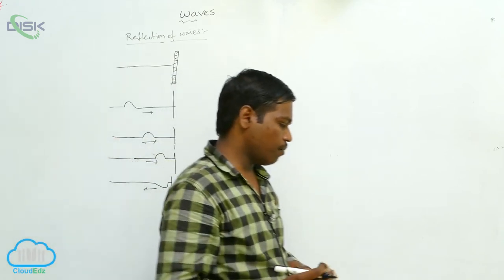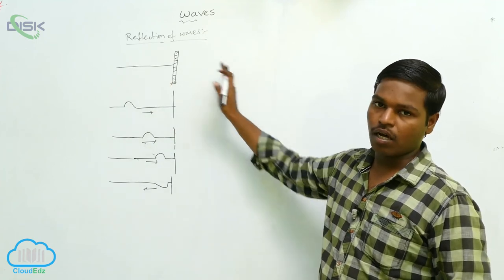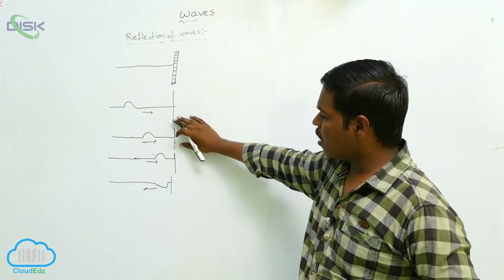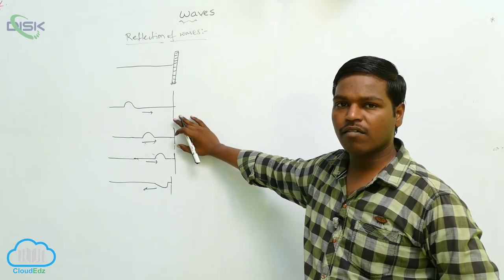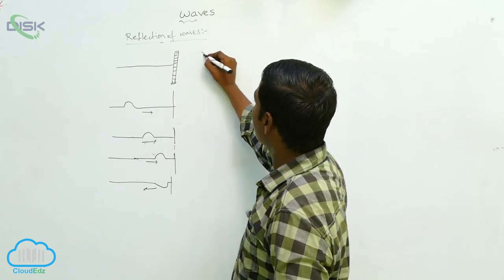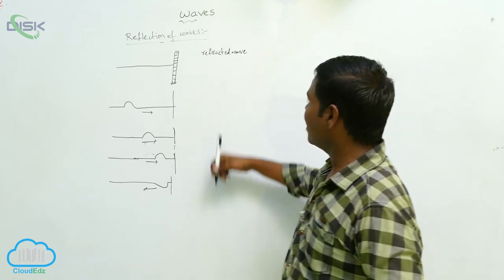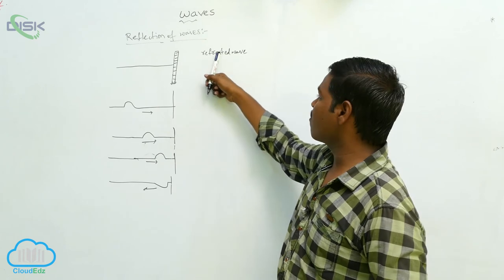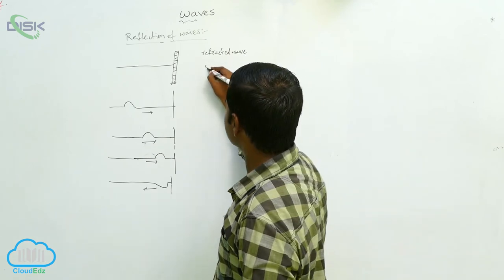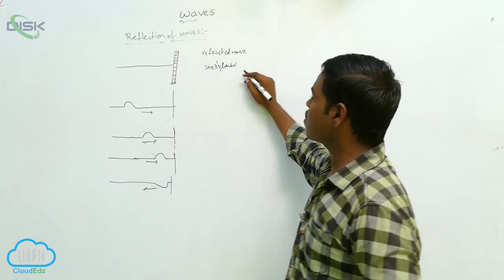When a wave is traveling in the medium and reaches the other end, some part of the wave is transmitted. If some part of the wave is transmitted, it is called a refracted wave, and it follows Snell's law of refraction. When a wave is not transmitted and reflects back, the regular reflection laws are valid.